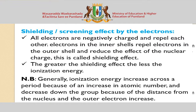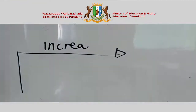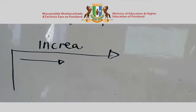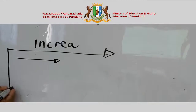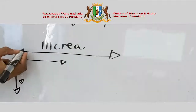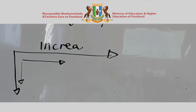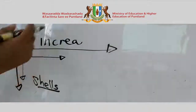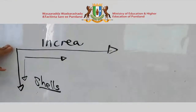Ionization energy increases across a period because nuclear charge increases. Ionization energy decreases down a group in the periodic table because the distance between the nucleus and the outer electron increases and shielding increases.